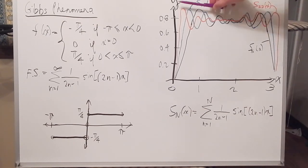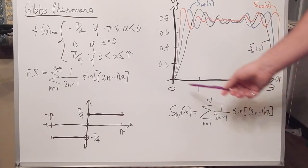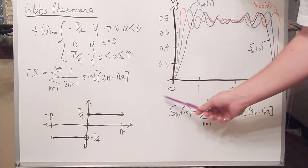Instead, the peaks, they maintain roughly the same height, but they move closer to the y-axis because the discontinuity occurs at the origin.